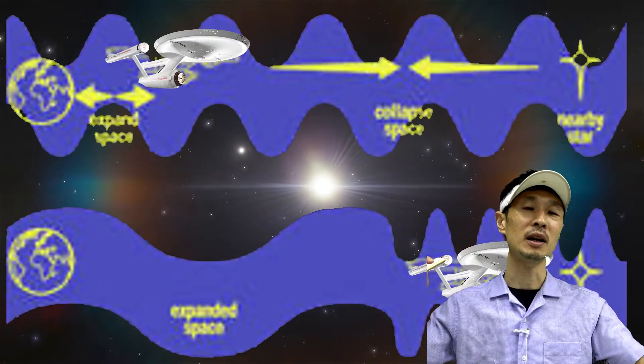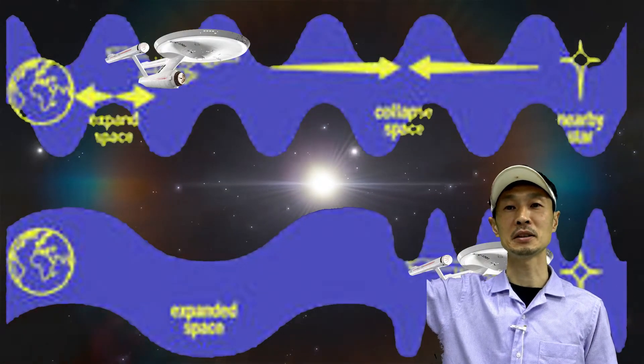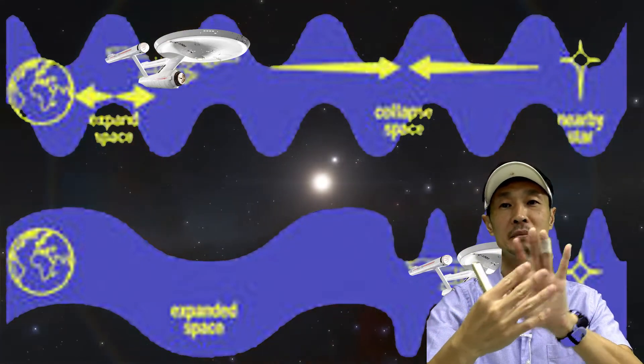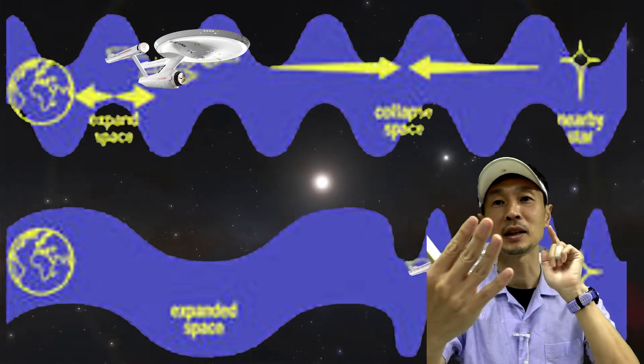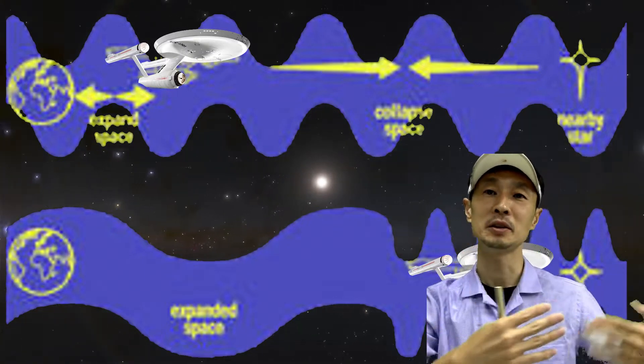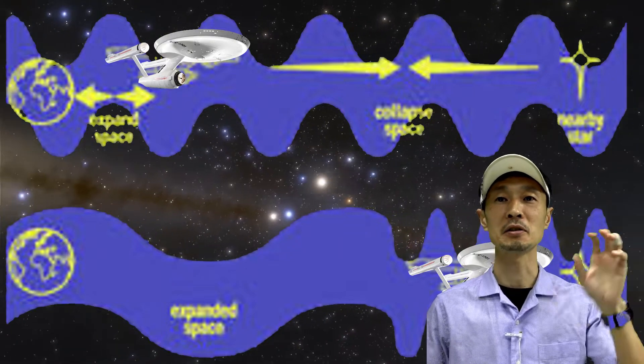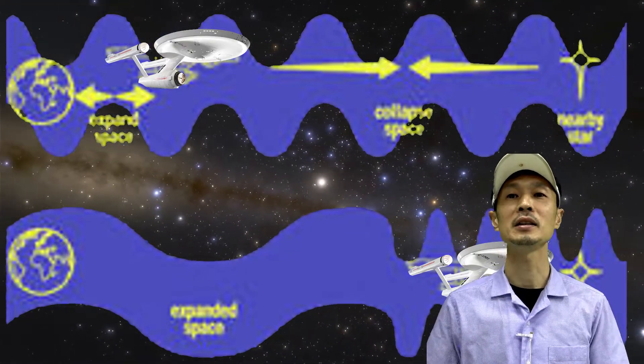Suppose you're leaving Earth and traveling to a destination star. If you shrink the space between you and the star, you get closer. You expand the space behind you, and Earth becomes far behind. In this way,